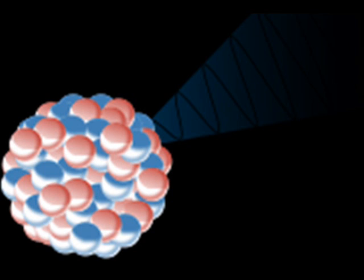Gamma rays are a form of electromagnetic radiation — light emission of frequencies produced by subatomic particle interactions such as electron or radioactive decay. Gamma rays are generally characterized as electromagnetic radiation with the highest frequency and energy, and the shortest wavelength within the electromagnetic spectrum.